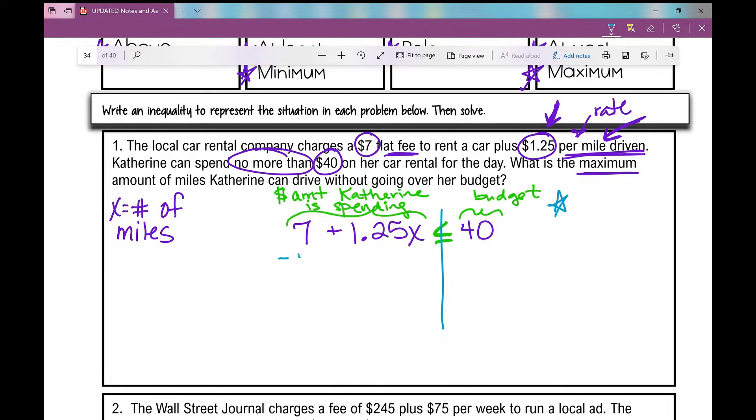The first thing I'm going to do is subtract 7. And I do that because, remember, my ultimate goal is to get X all by itself. 40 minus 7 is 33. And then at this point, I'm going to divide by 1.25.